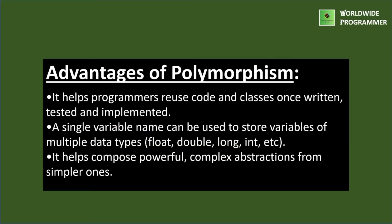Advantages of polymorphism: it helps programmers to reuse code and classes once written, tested, and implemented. A single variable name can be used to store variables of multiple data types like float, double, long, integer, etc. It helps compose powerful complex abstractions from simpler ones.